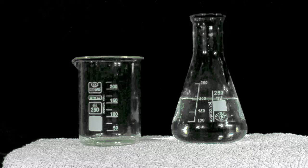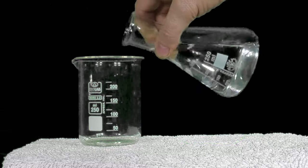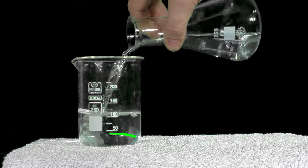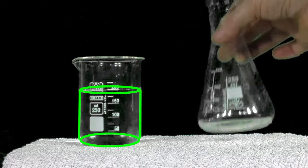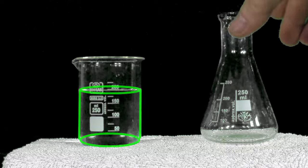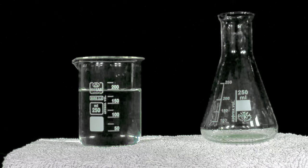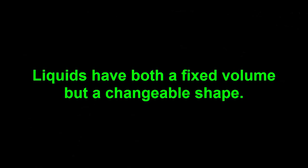How about its shape? In the flask, the water is the shape of a cone. Same as the shape of the flask. When we pour the water back into the beaker, its shape becomes cylindrical. Same as the beakers. The shape of a liquid changes to match the shape of the container it's in. This means that liquids have a fixed volume, but a changeable shape.